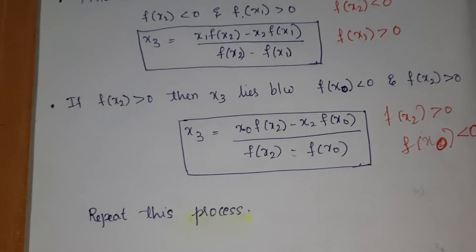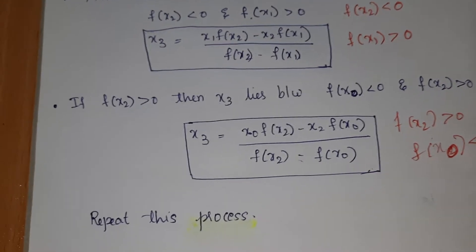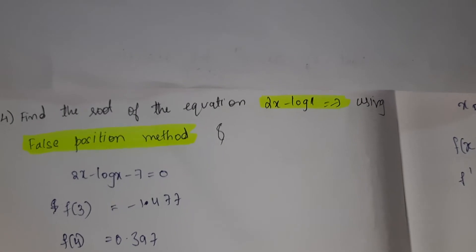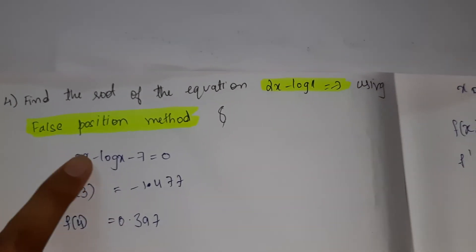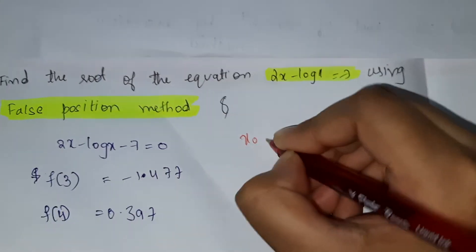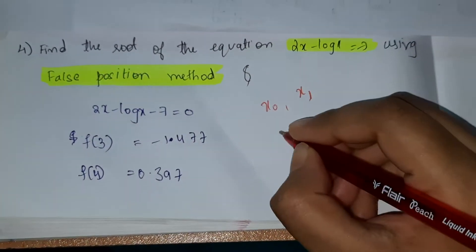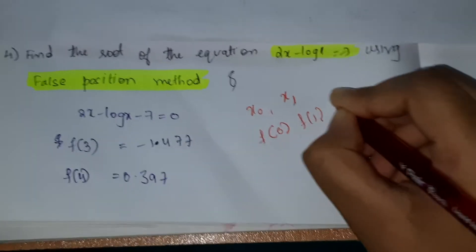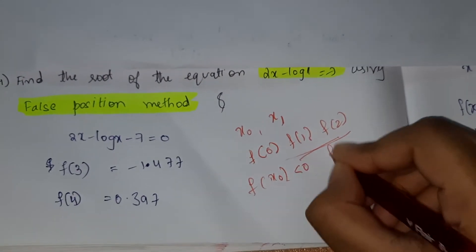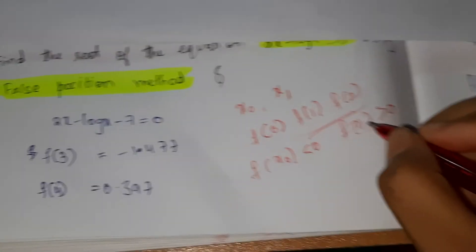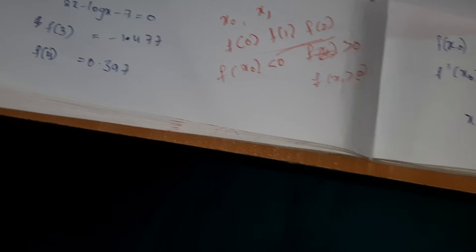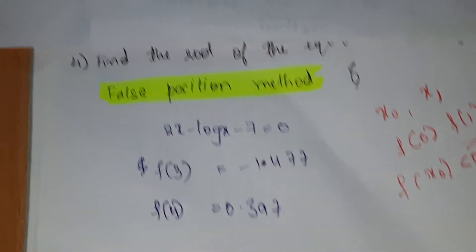Let's see a problem — find the root of the equation 2x·log(x) = 7 using the false position method. This is our f(x). We need to find x0 and x1. I tried f(0), f(1), and f(2), but they didn't satisfy the criteria of f(x0) < 0 and f(x1) > 0. Finally, I found that f(3) gives a negative value and f(4) gives a positive value.